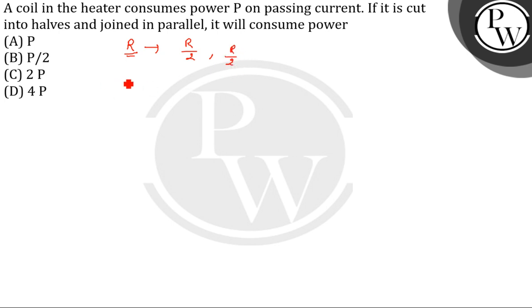So now we will find out the equivalent resistance when connected in parallel. That is 1 by Rp equals to 1 by R1 plus 1 by R2. So 1 by Rp will be equal to 1 by R by 2 plus 1 by R by 2, which gives us 1 by Rp is equal to 2 by R plus 2 by R.